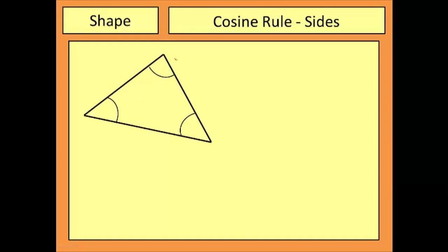In this video we're going to have a look at the cosine rule, specifically the version of the cosine rule that enables me to find the missing side in a non-right-angle triangle.